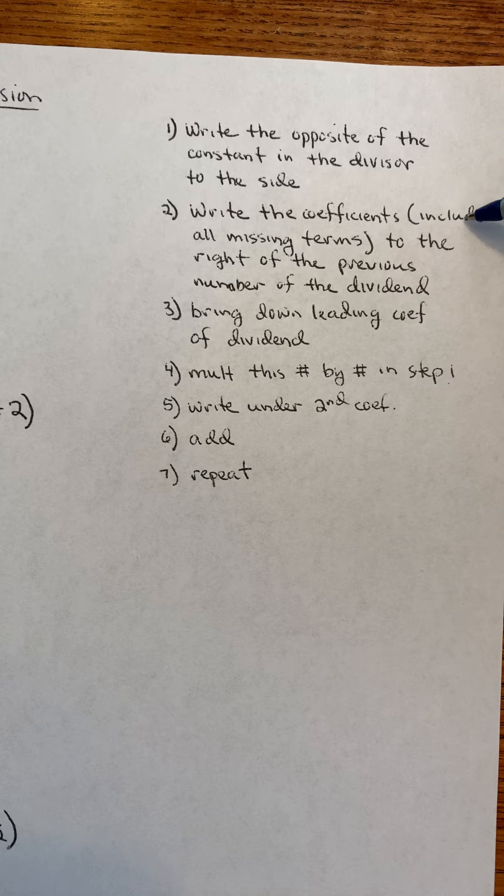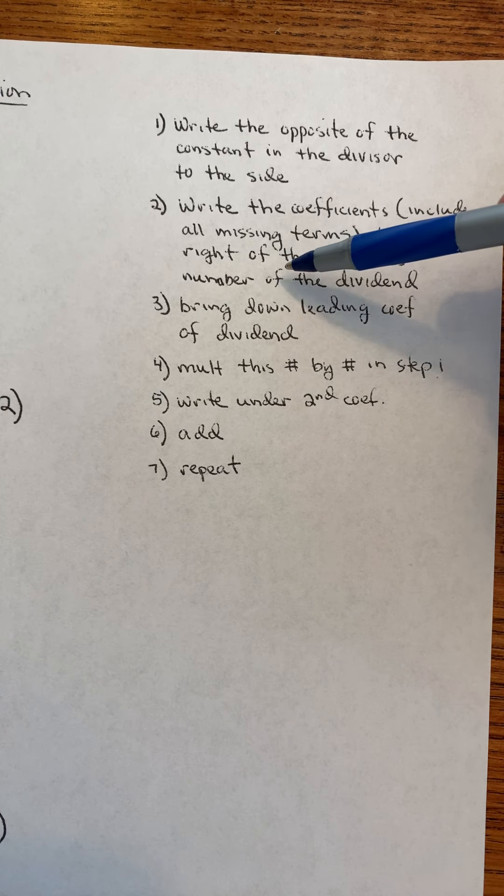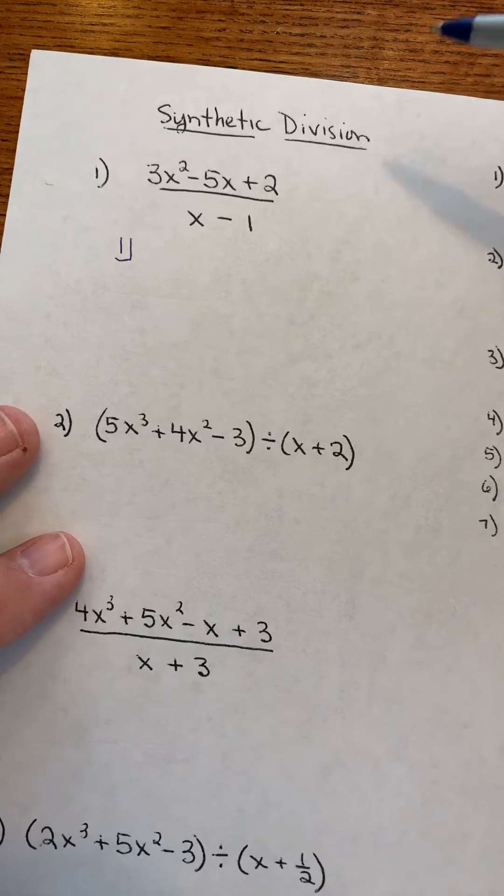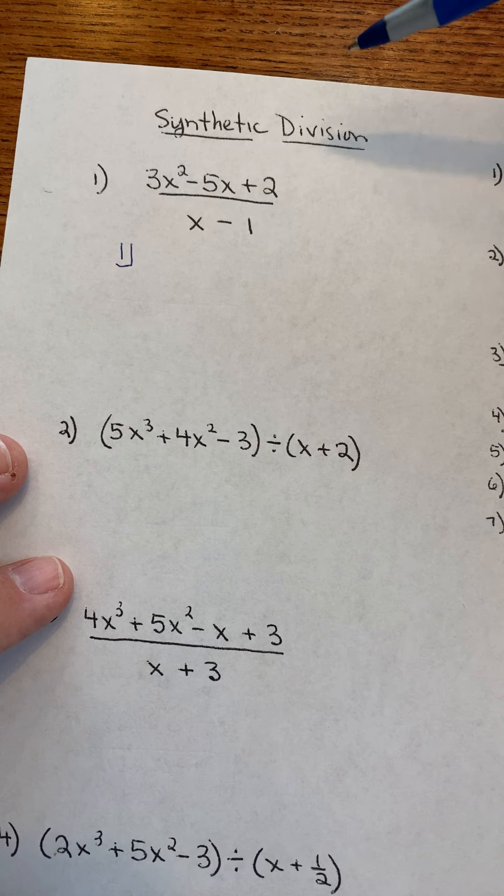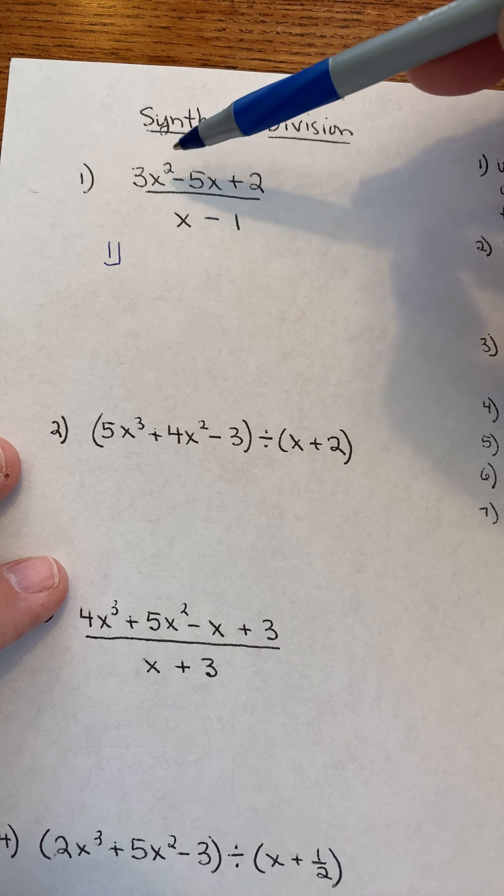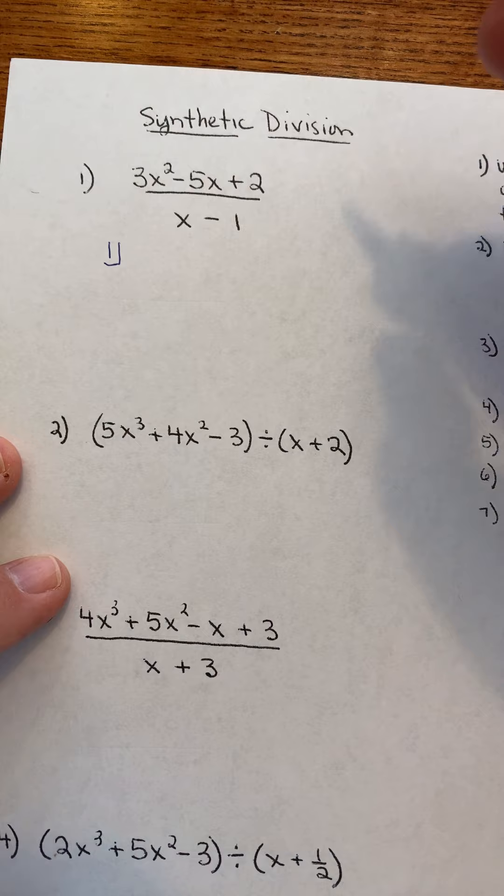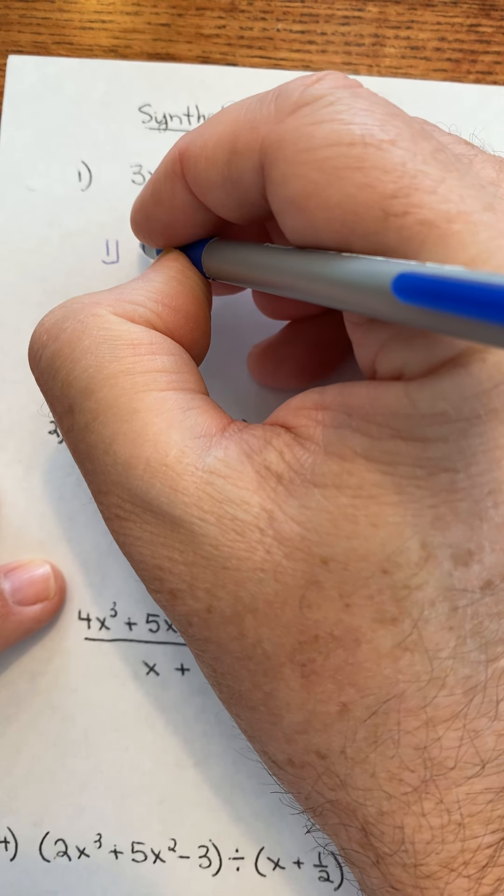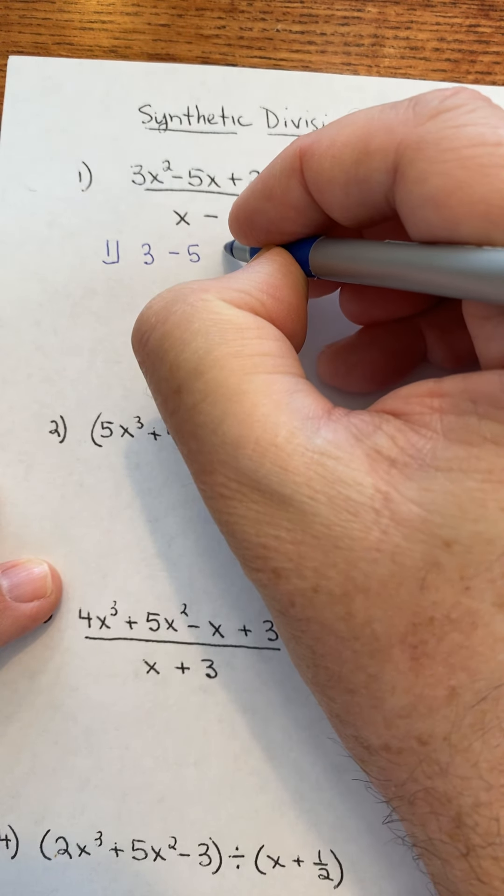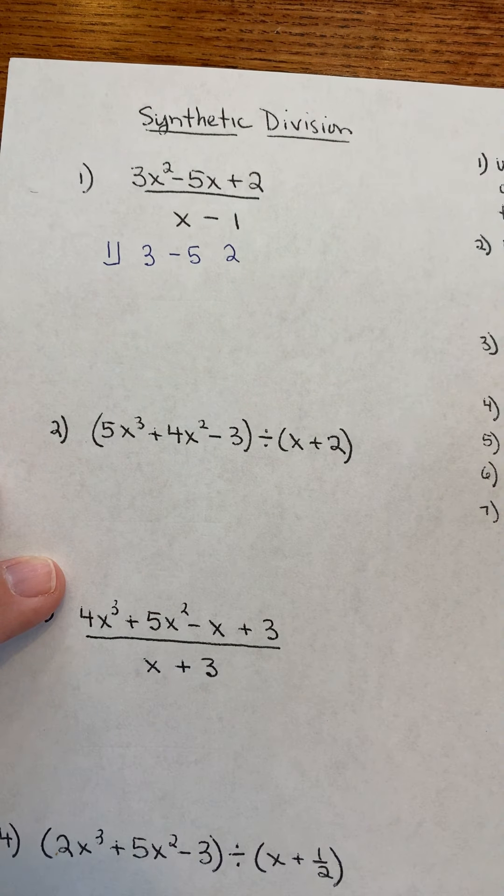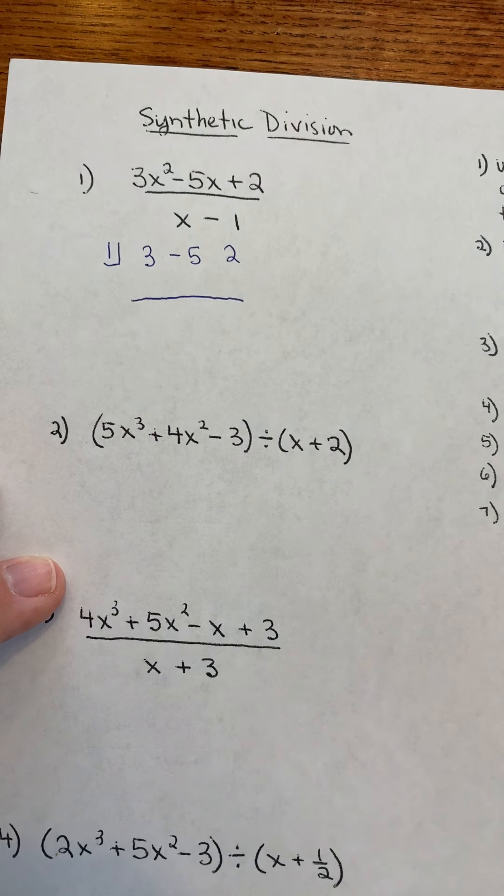Write the coefficients include all missing terms to the right of the previous number of the dividend. Okay, the dividend is this thing on top, and I write down the coefficients, and I check to see if there's any missing terms. X to the second, X to the first, nothing missing. So I just write down the coefficients just to the right. Notice I'm not using any X's. Draw a line, leave a space, because I'm going to put some numbers under there.